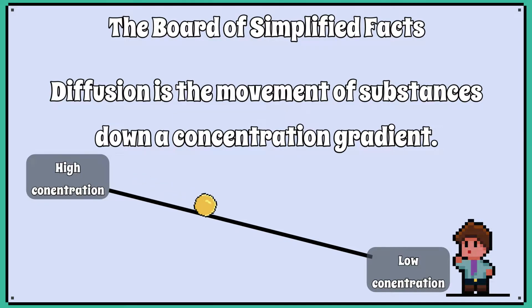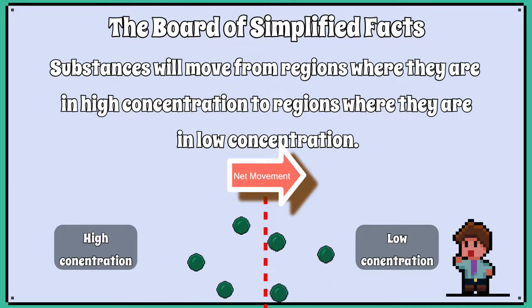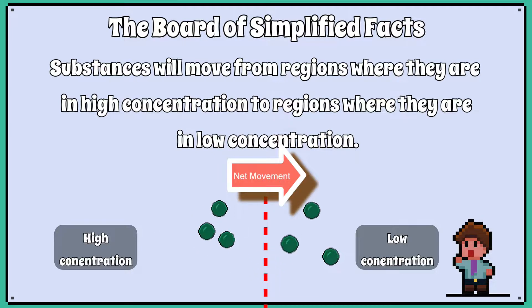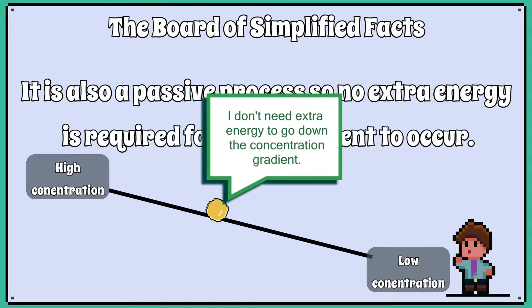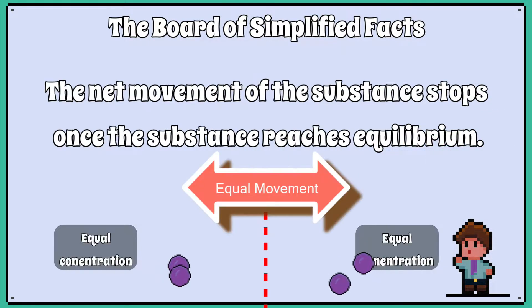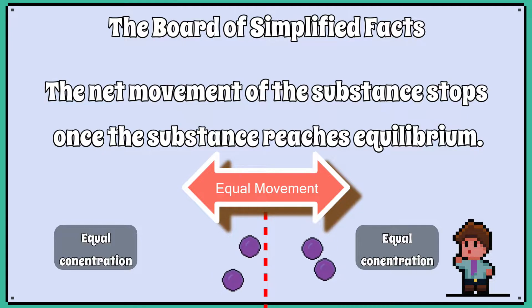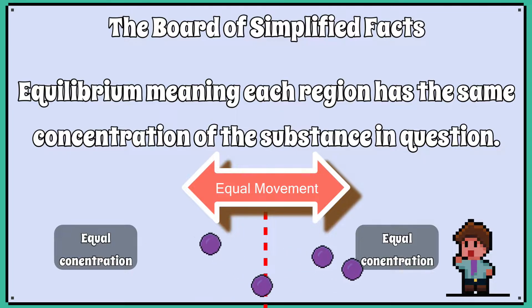Diffusion is the movement of substances down a concentration gradient. Substances will move from regions where they are in high concentration to regions where they are in low concentration. It is also a passive process, so no extra energy is required for the movement to occur. The net movement of the substance stops once the substance reaches equilibrium, meaning each region has the same concentration of the substance in question.